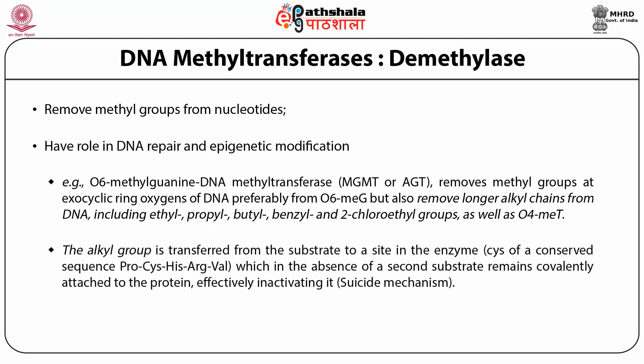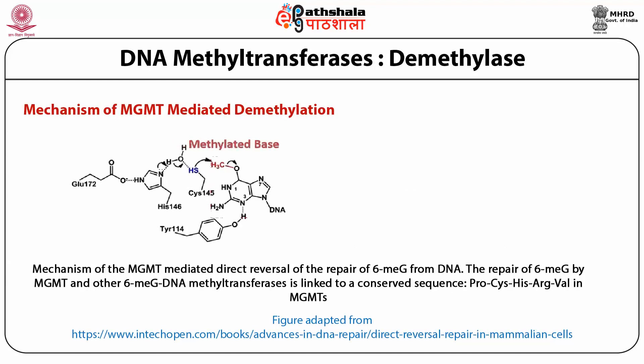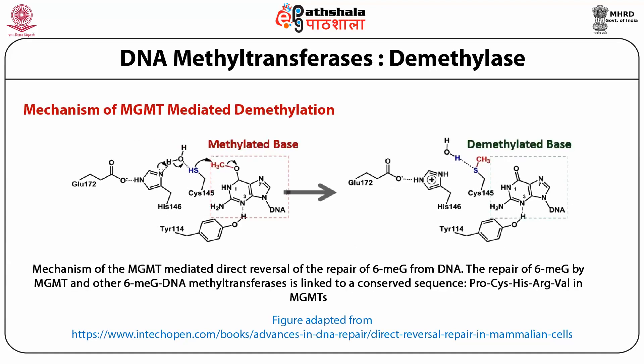DNA methyltransferases that can remove methyl groups are referred to as demethylases and also have roles in DNA repair and epigenetic modification. One example is O6-methylguanine DNA methyltransferase (MGMT or AGT). This enzyme removes methyl groups at exocyclic ring oxygens of DNA, preferably from the O6-methylguanine position, but also removes longer alkyl chains such as ethyl, propyl, butyl, benzyl, and two-chloroethyl groups, as well as O4-methylated thymine. The alkyl group is transferred from the DNA to a cysteine residue in the conserved sequence proline-cysteine-histidine-arginine-valine in the enzyme, and because no second substrate regenerates the enzyme, these enzymes work on a suicide mechanism.